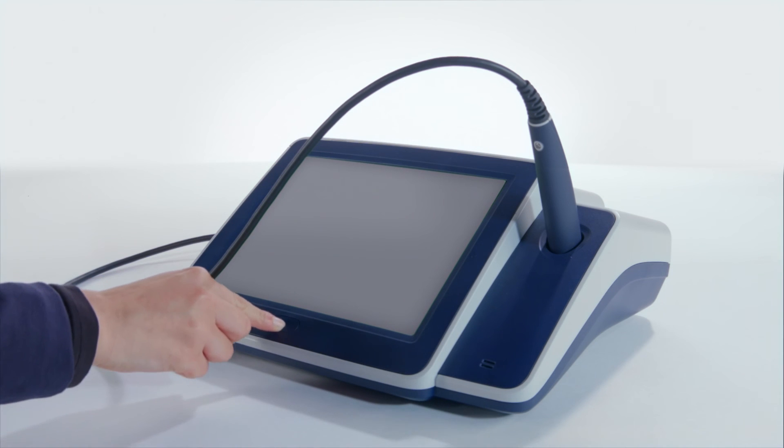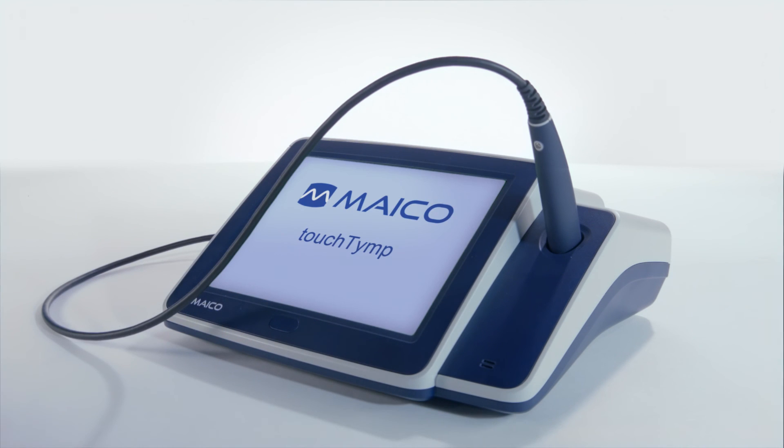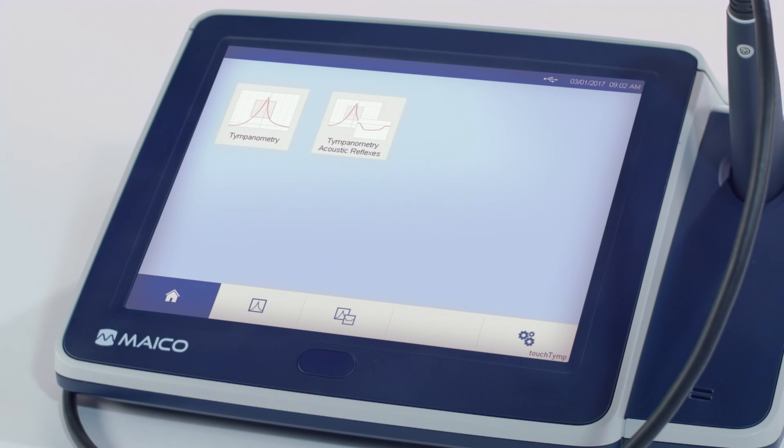To turn on the TouchTemp, press the blue button on the front of the device. The TouchTemp will load the settings and once completed, the home screen is displayed.